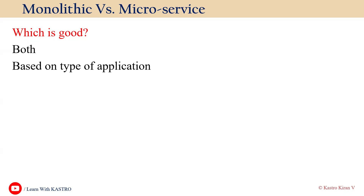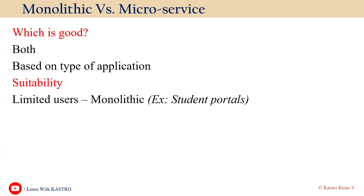Examples of monolithic-based architecture include student portals and newspaper websites. If you have a large set of users, it is recommended to use microservice-based architecture. Applications like Netflix, Prime, and Hotstar have large user bases and are examples of microservice-based architecture.